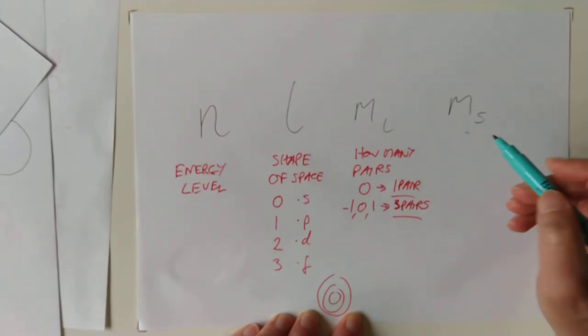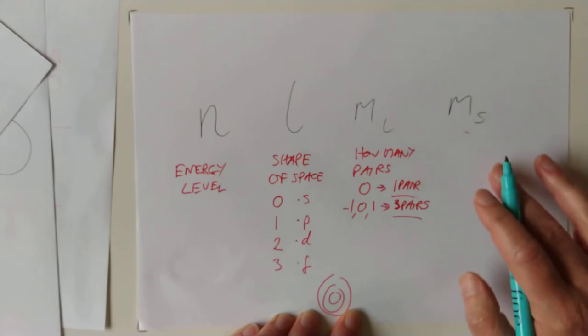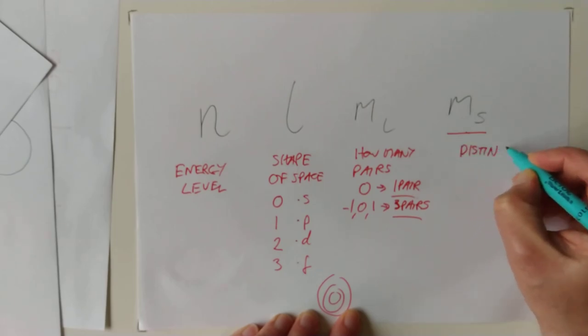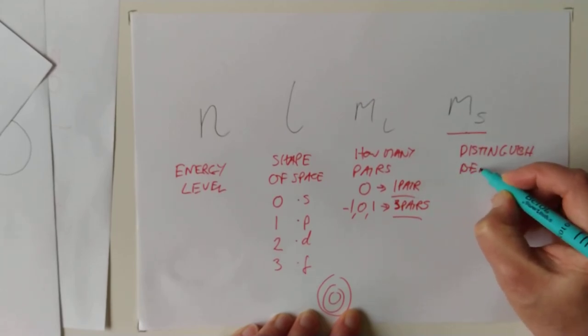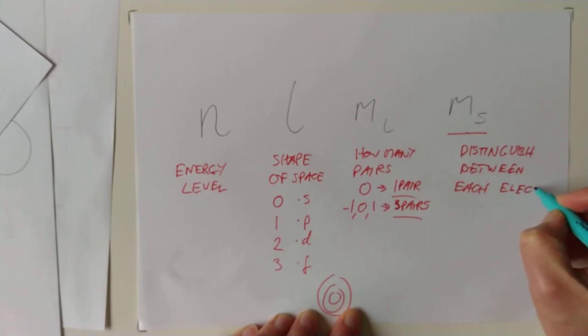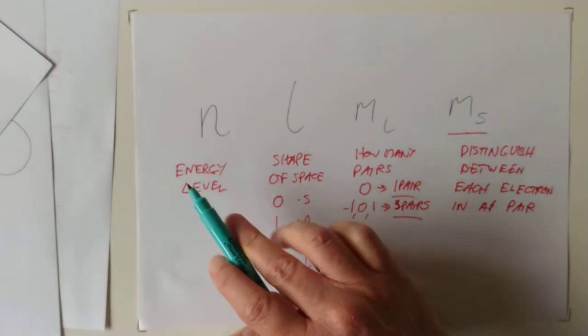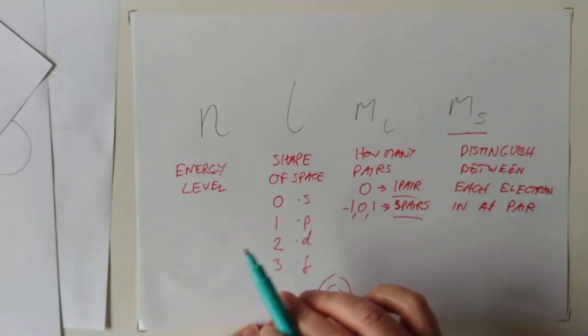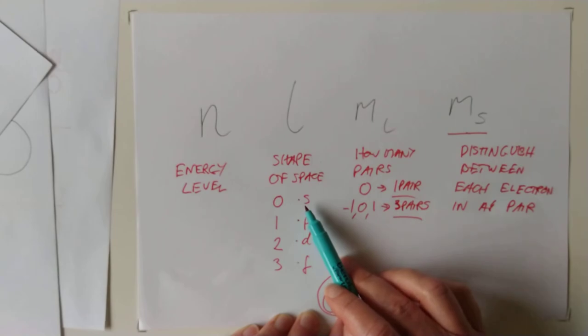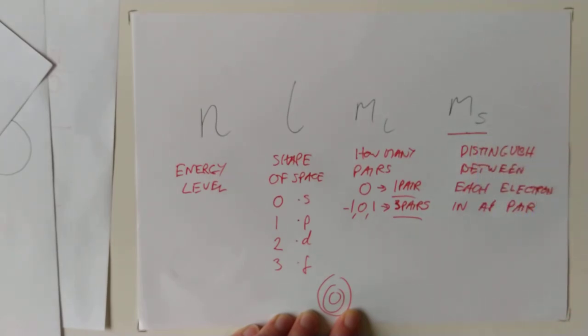Lastly, what's the point of this one? The magnetic spin quantum number. Well, this is to keep one of the fundamental principles of quantum mechanics happy. It enables you to distinguish between each electron in a pair.